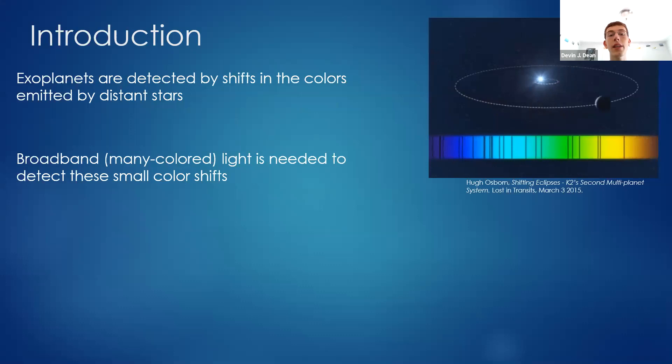Planets outside of our solar system are very difficult to detect, but they can be detected by looking at the colors emitted by the stars that they orbit. As a planet orbits a star, its gravitational pull leads to shifts in the colors emitted by the star. These shifts can be detected with a special device, but one key component for such a device is that a multicolored light source is needed.